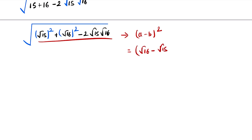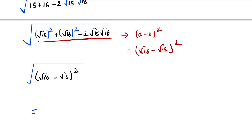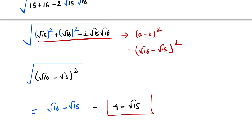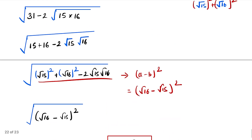So this becomes under root 16 minus under root 15, the whole square. Taking the outer under root, it cancels with the square, leaving us with under root 16 minus under root 15. The value of under root 16 is 4, so the final answer is 4 minus under root 15.